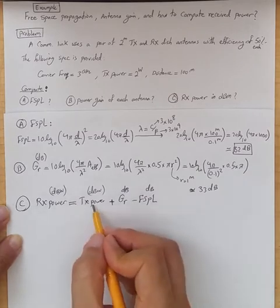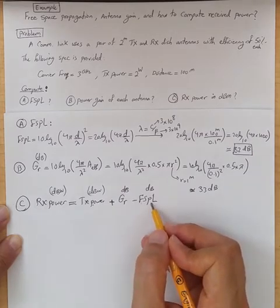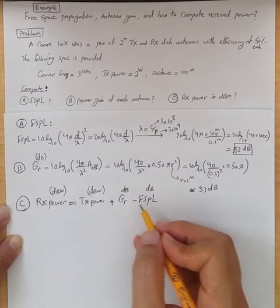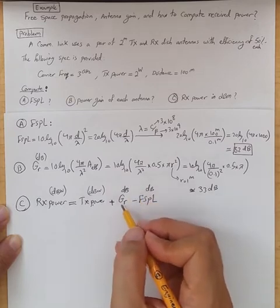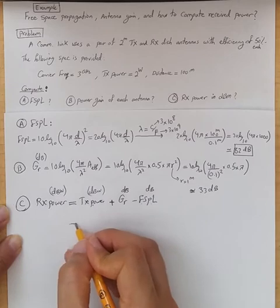Because the transmit power will be attenuated by the amount of free space path loss because of the distance between transmitter and receive antenna, and then the received power will be magnified by the amount of power gain of the received antenna. That would be the received power.